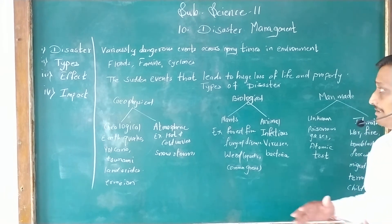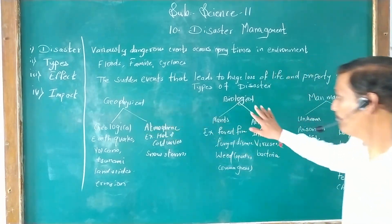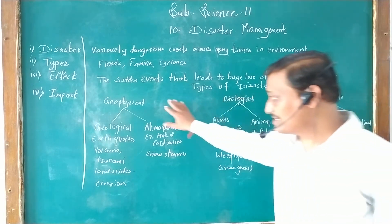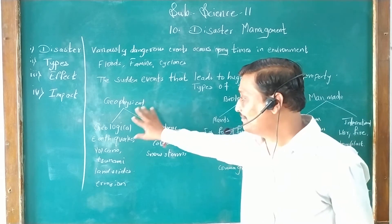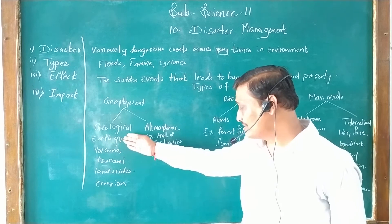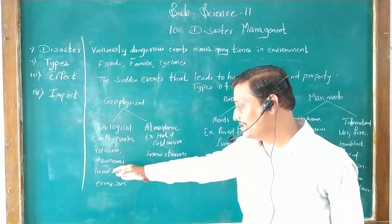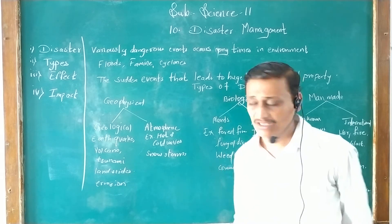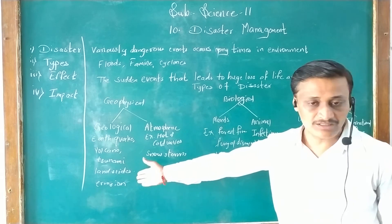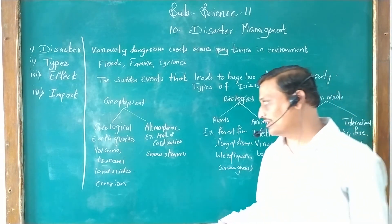These disasters are further classified into geophysical, biological, and man-made. In geophysical disasters, they are further categorized into geological. Examples of these geological disasters are earthquake, volcano, tsunamis, landslides, and erosions. All these are geological disasters. You have already seen the definitions of these in the lower classes.